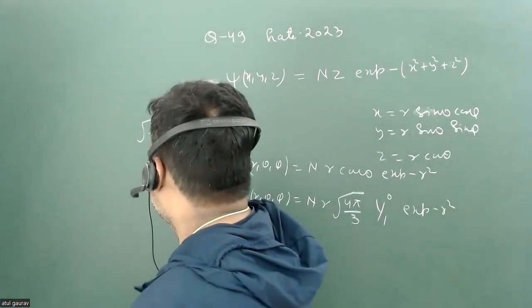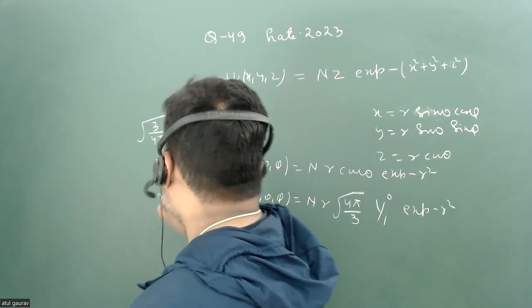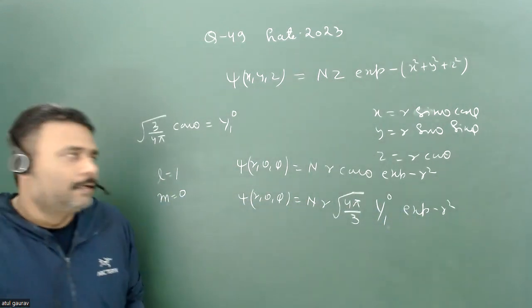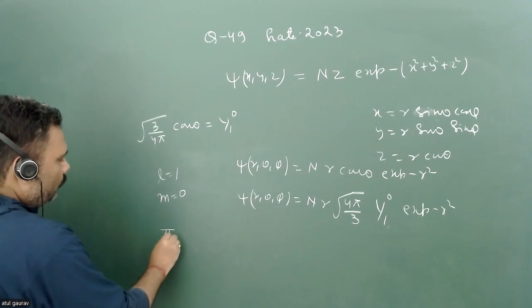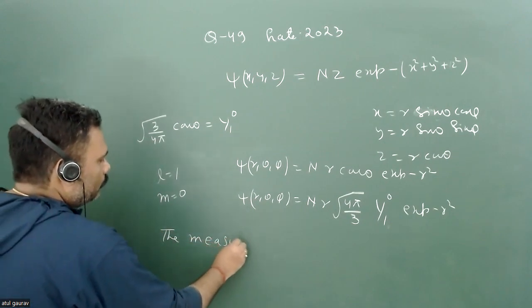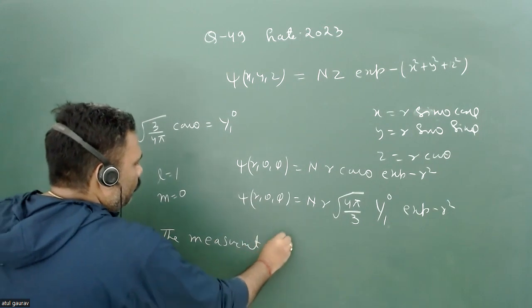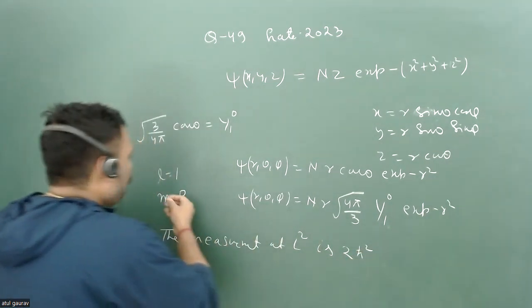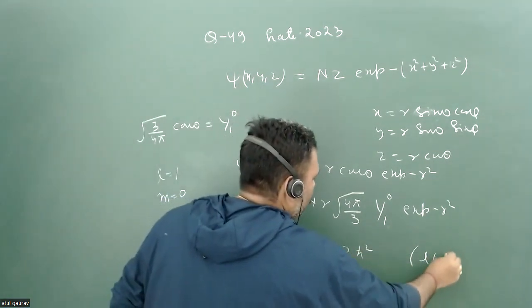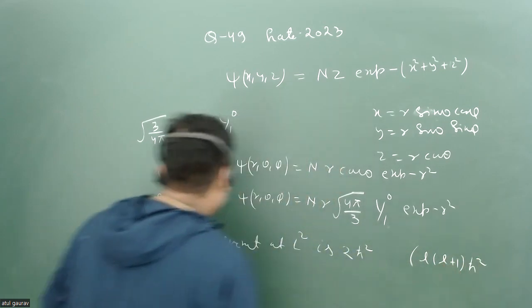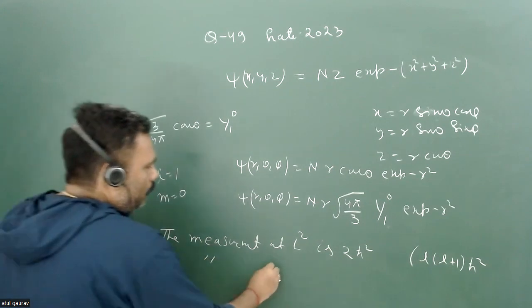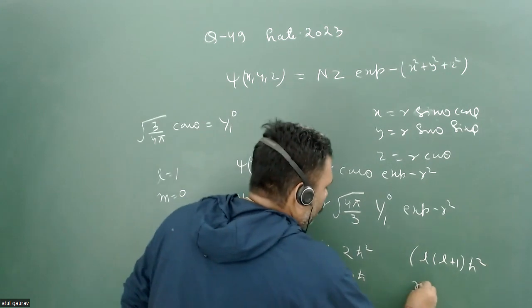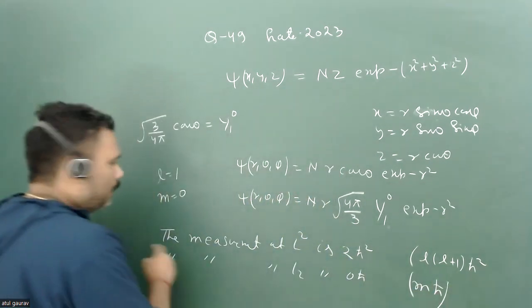We can identify quantum number l equals 1 and m equals 0. So if l equals 1, then the measurement of L square is 2 h-bar square, because the measurement of L square is l times (l plus 1) times h-bar square. And the measurement of Lz is 0 h-bar. So I think there may be some option that 2 h-bar square and 0 h-bar. That is option C.